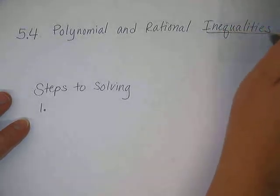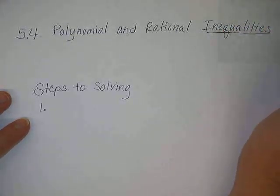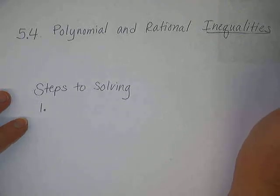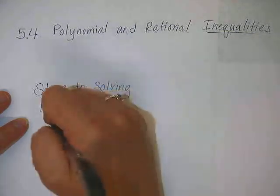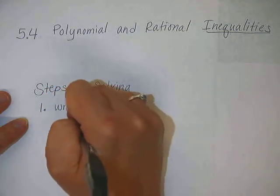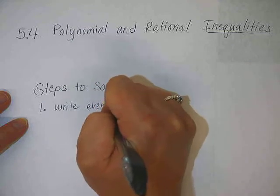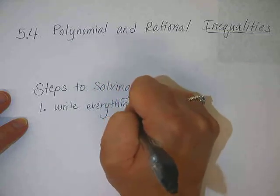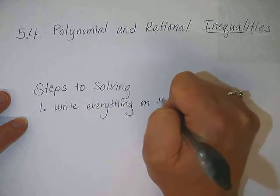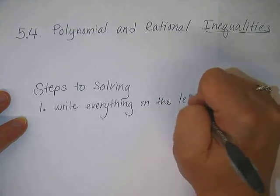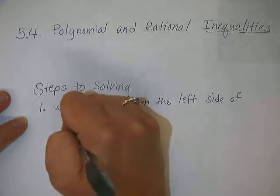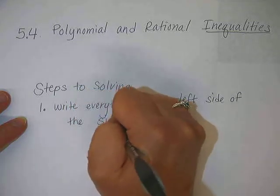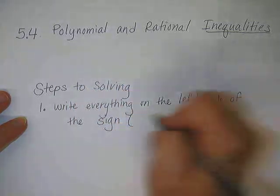Because it's inequalities, it won't be an equal sign — it will be a less than, or a greater than, or a less than and equal to, or a greater than and equal to. So again, step one: write everything on the left side of the inequality sign.